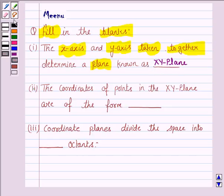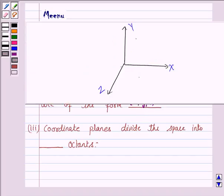Now the second one says the coordinates of a point in the xy-plane are of the form (x, y, 0). So here if we are given a point in the xy-plane, the coordinate of z will be 0 and the point in the xy-plane is of the form (x, y, 0).